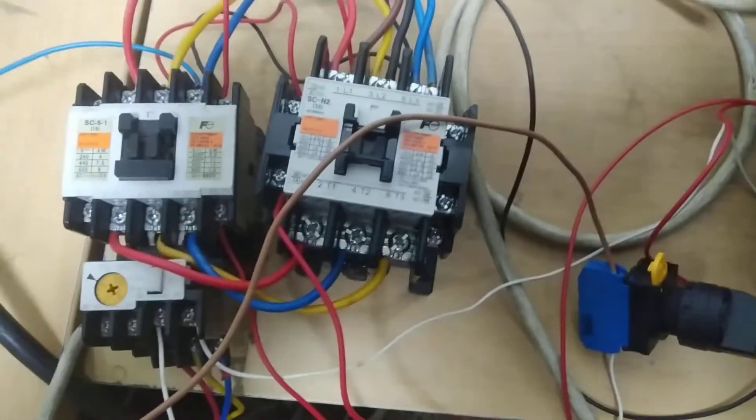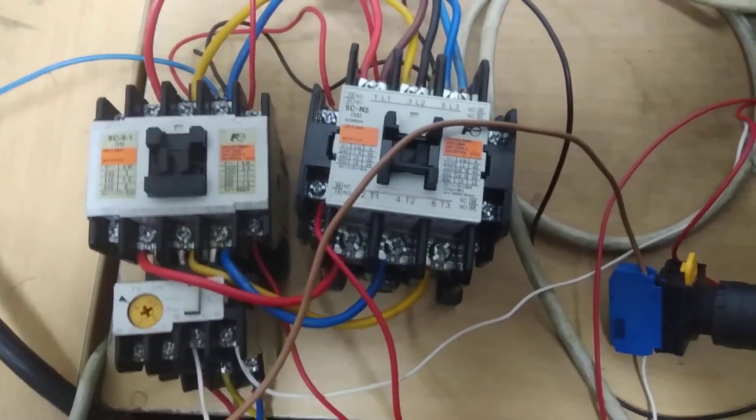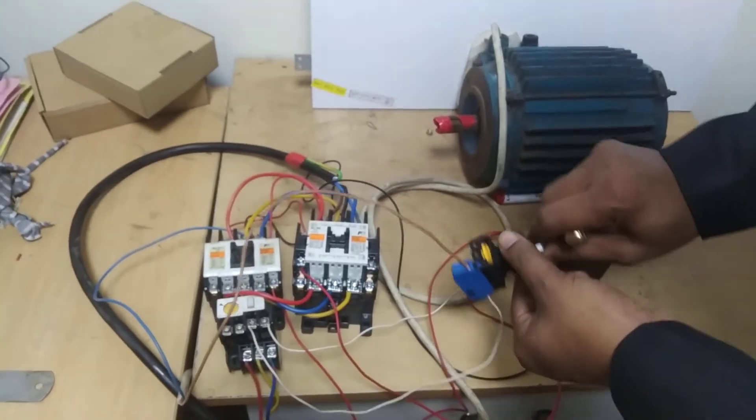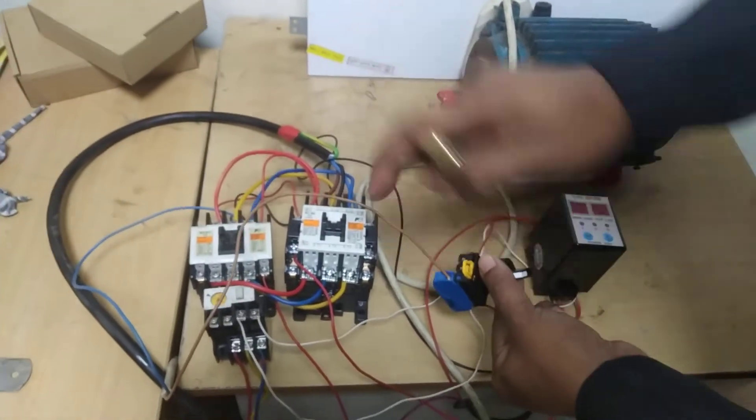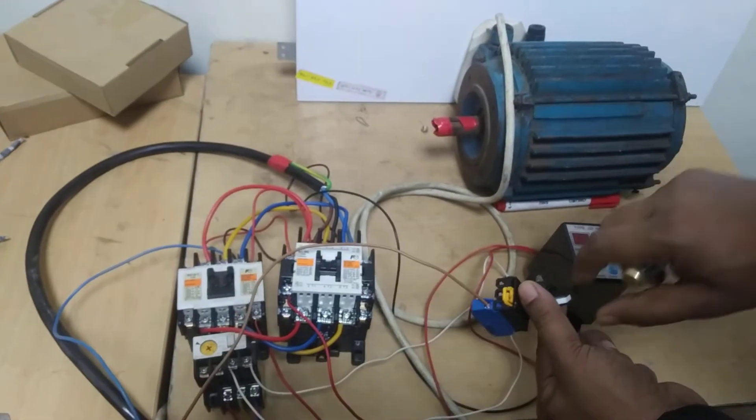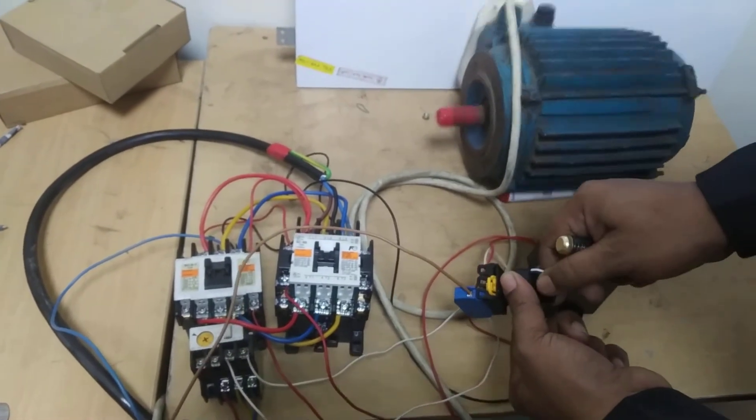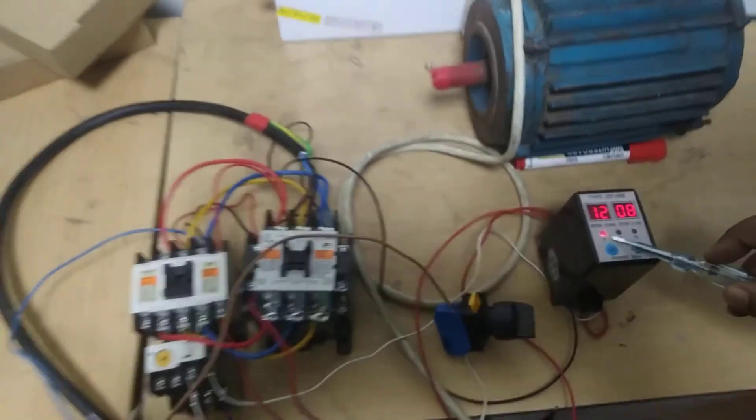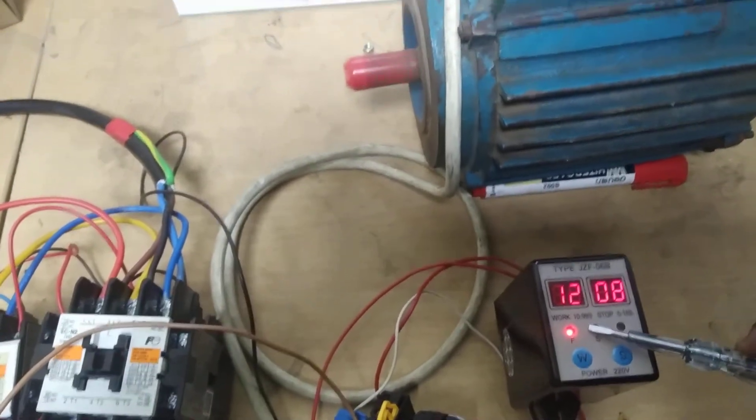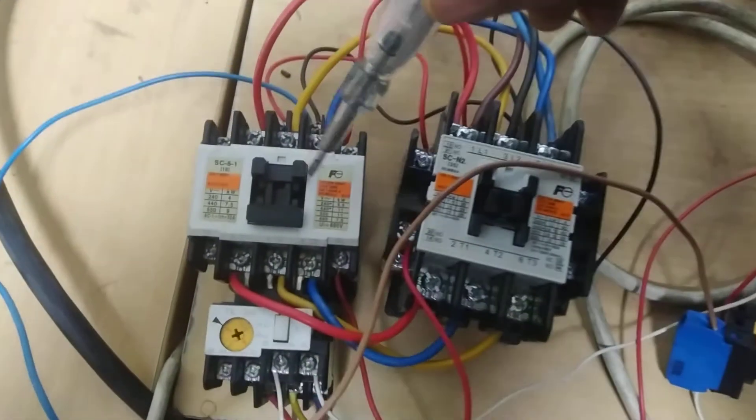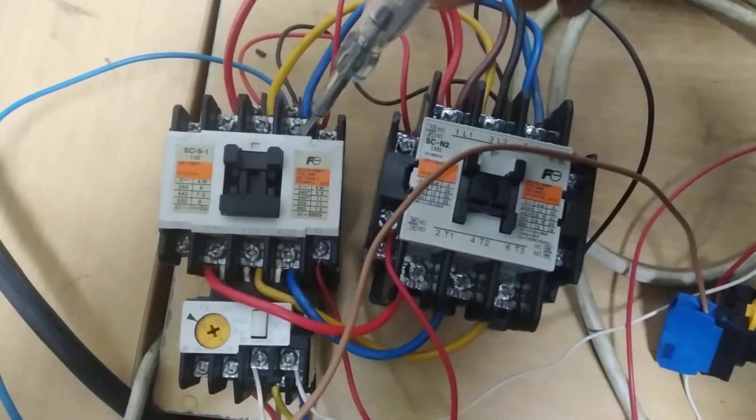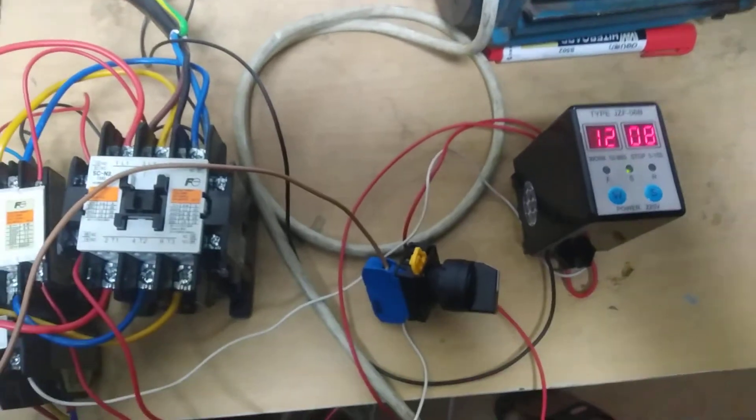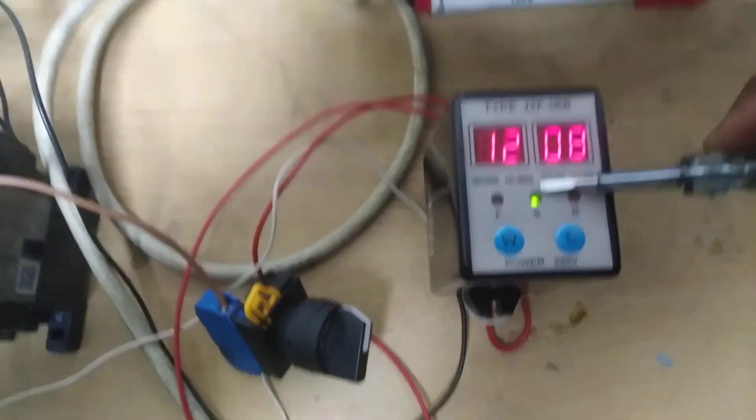Now we'll make the power connection to turn on the motor. We'll connect the twin timer forward contact to activate the system.